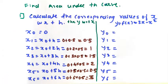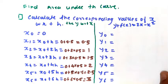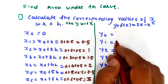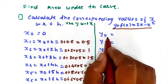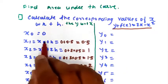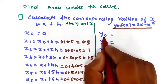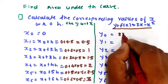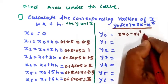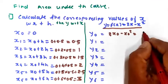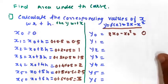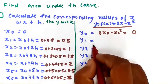Next, we find the values of y with respect to x. The equation of y is 2x minus x squared. For y0: substituting x0 = 0, we get 2×0 minus 0 squared = 0. So y0 = 0.